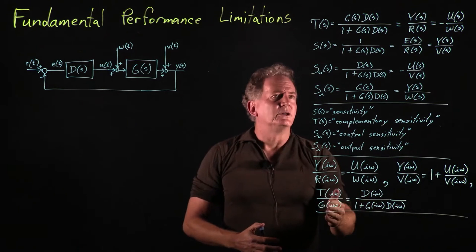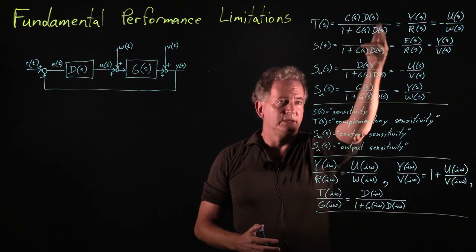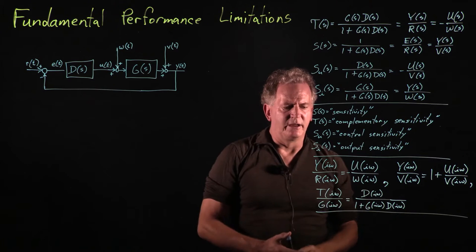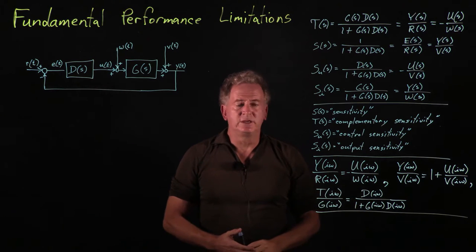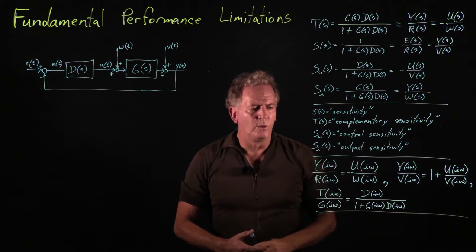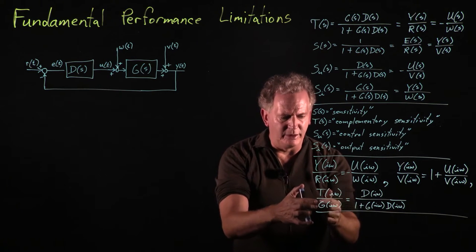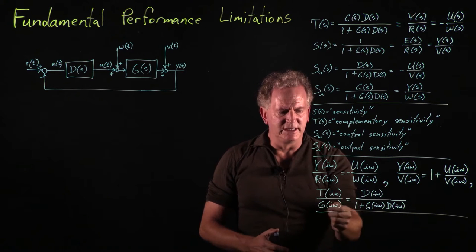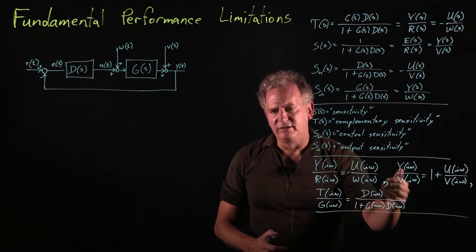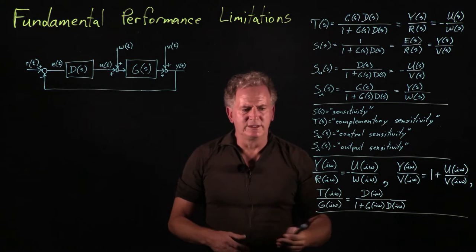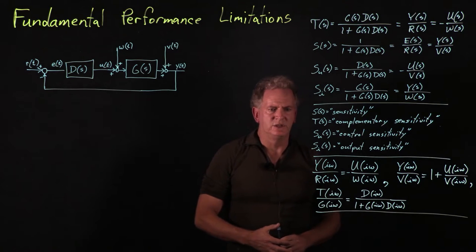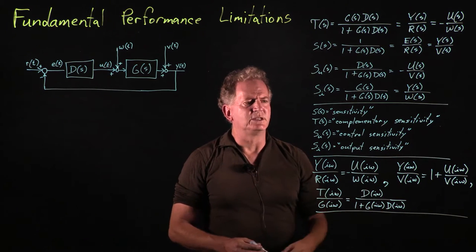From the above relations, T over G equals D over 1 plus GD. Plugging in S equals i omega, at frequencies where we want good tracking — so T of i omega nearly one meaning R of i omega equals Y of i omega — if the plant gain G is small at those frequencies, the only way to get one over a small number out of the right-hand side is if D is a large number. So good tracking at frequencies with low plant gain requires large controller gain. That's generally a challenge and represents another fundamental performance limitation.